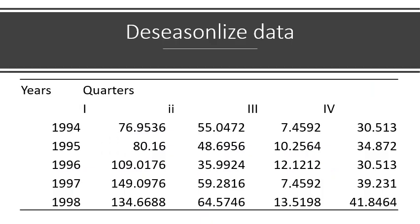Now I multiplied the seasonal index of quarter first with all of the first quarter values and obtained these values. Similarly, for quarter second, I multiplied the seasonal index of quarter second by the quarter second values of all the years, and so on. We have this deseasonalized data.